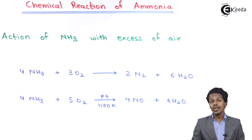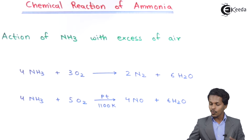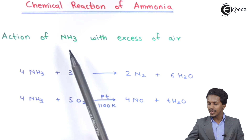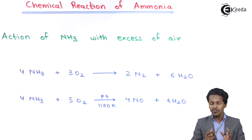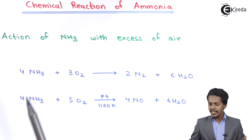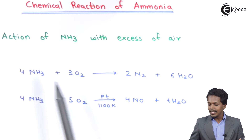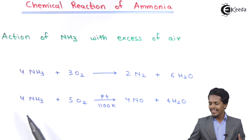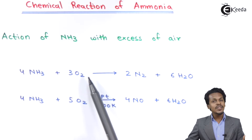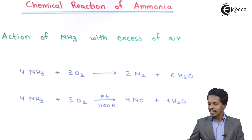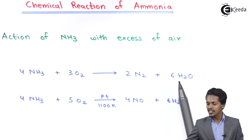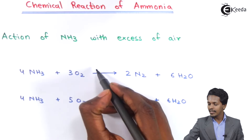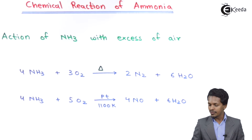Here we are going to talk about the chemical reactions of ammonia, starting with the first one: the action of ammonia with an excess amount of air. We are reacting ammonia in the presence of oxygen — present in air — and without using any catalyst. The product we get is 2 moles of nitrogen along with 6 moles of H₂O.